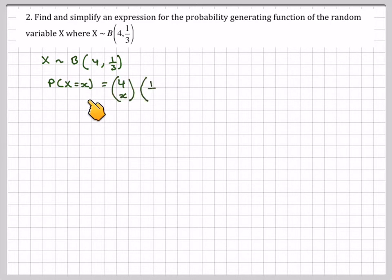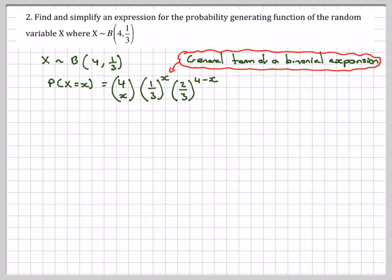The probability that X is equal to x will be 4cx, 1 third to the x, 2 thirds to the 4 minus x. It's like the general term of a binomial expansion.